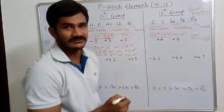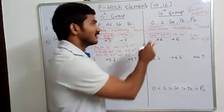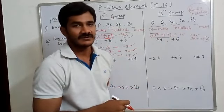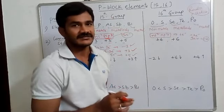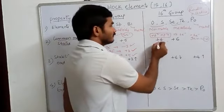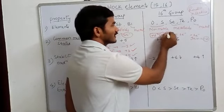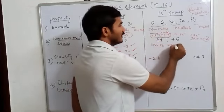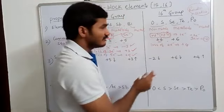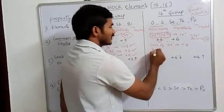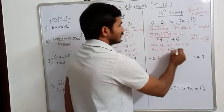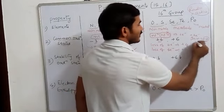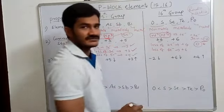Not all Group 16 elements — oxygen, sulfur, selenium, tellurium, polonium — can commonly gain 2 electrons. Loss of 4 electrons gives plus 4, and loss of 6 electrons gives plus 6. Oxygen mainly exhibits minus 2, but there are exceptions in compounds like OF₂ and O₂F₂ where it has different oxidation states.